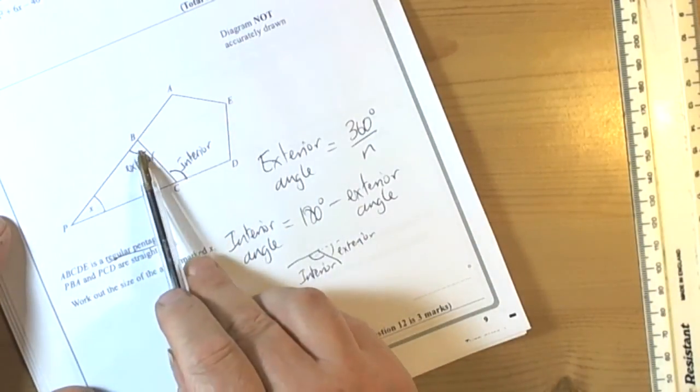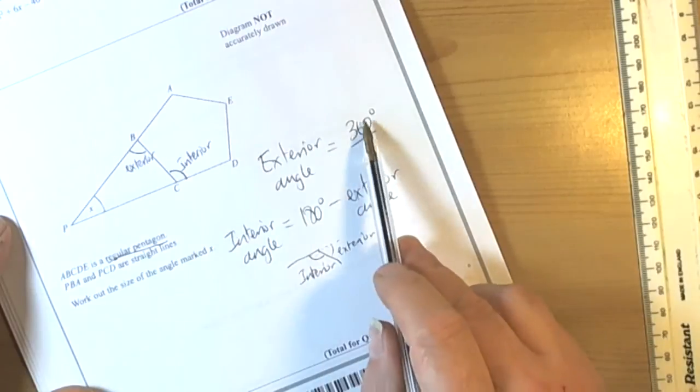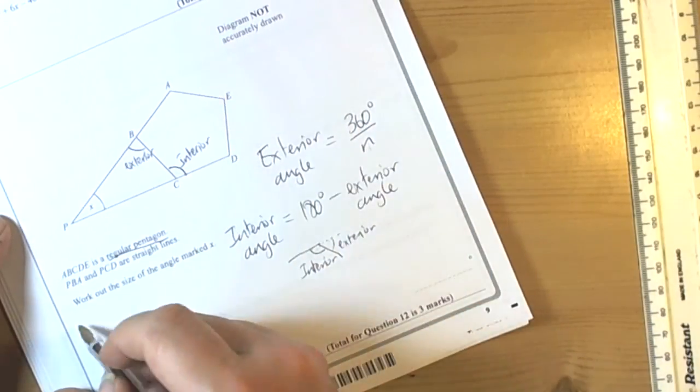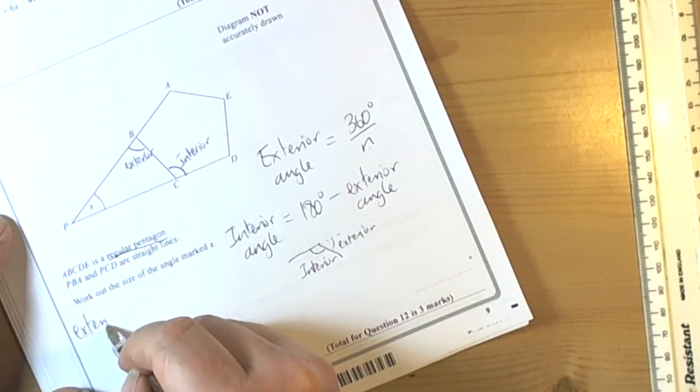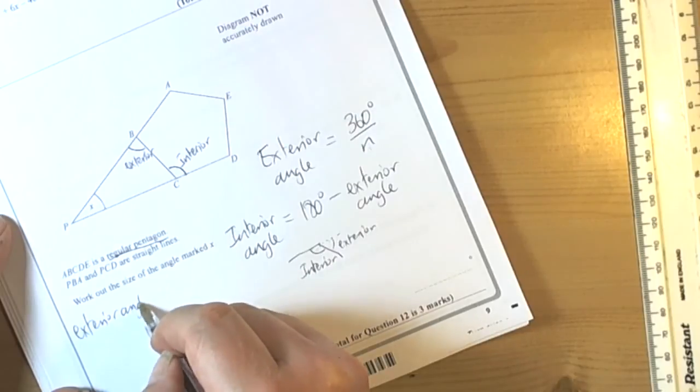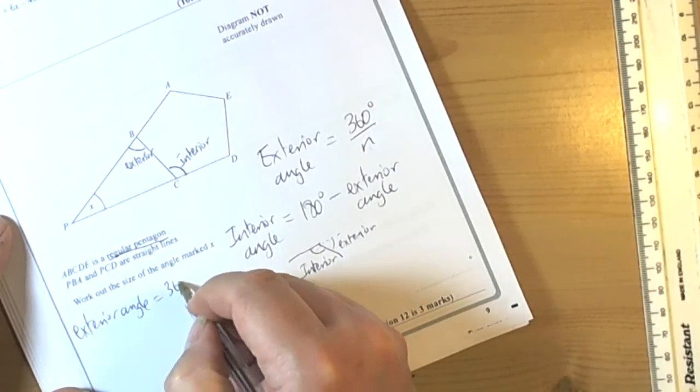So if we work out the exterior angle to the pentagon, because that's the easiest one to do first, then the exterior angle is equal to 360 degrees.